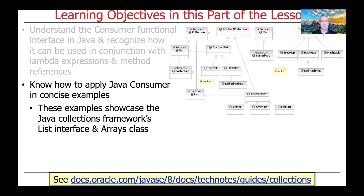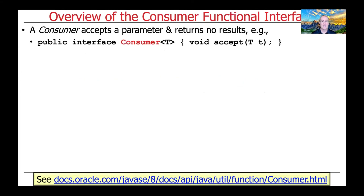This particular example will demonstrate the use of the Consumer Functional Interface in the context of Java Collection Framework's List Interface, as well as the Arrays class. A consumer accepts a parameter and returns no results, so in some sense it's really the inverse of a supplier, which takes no parameters and returns a result.